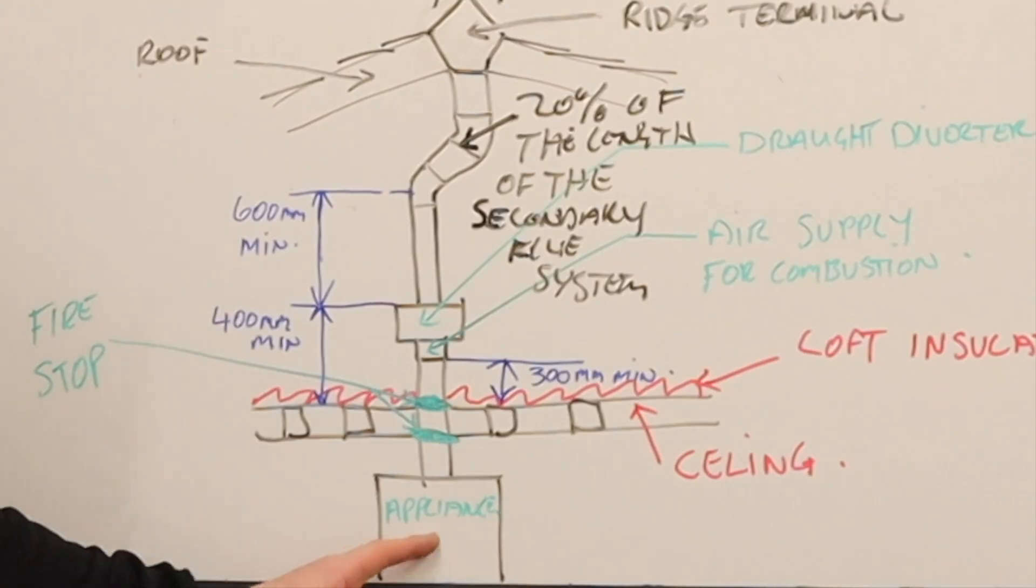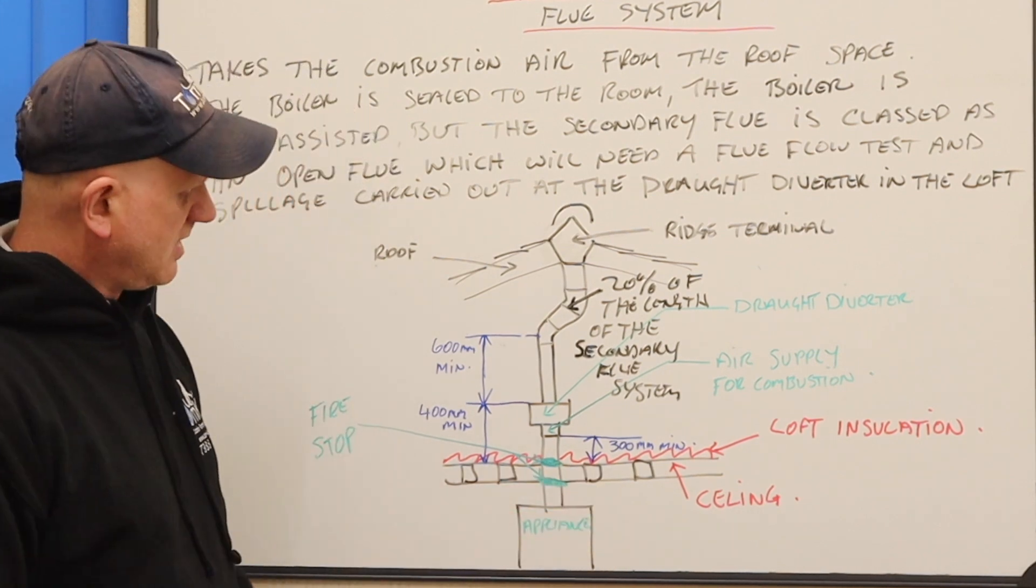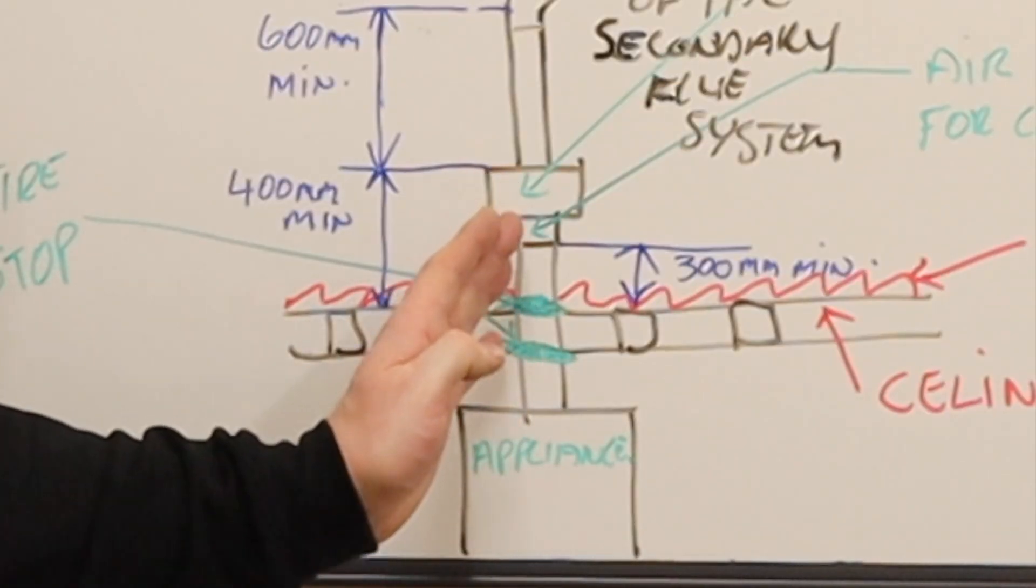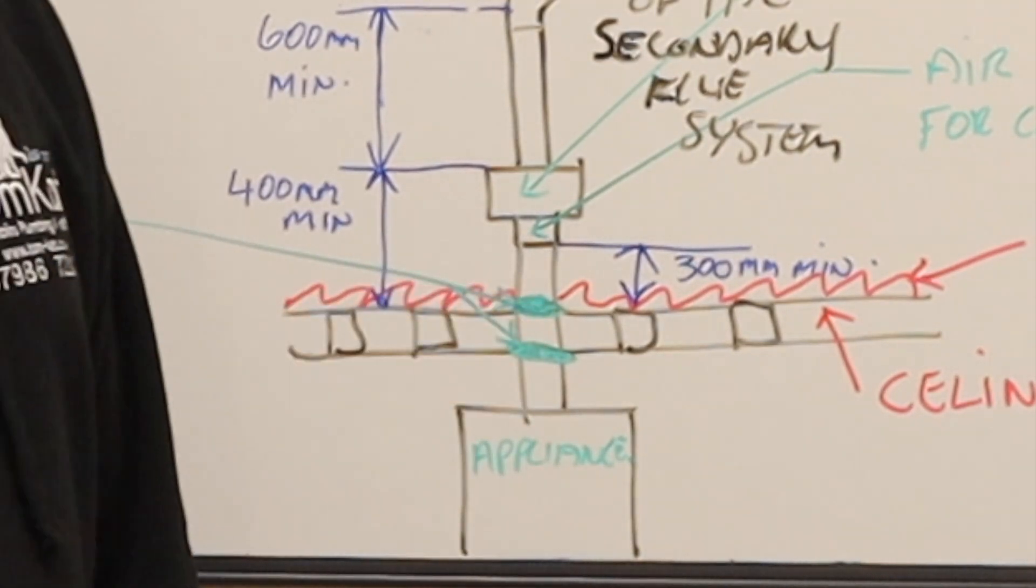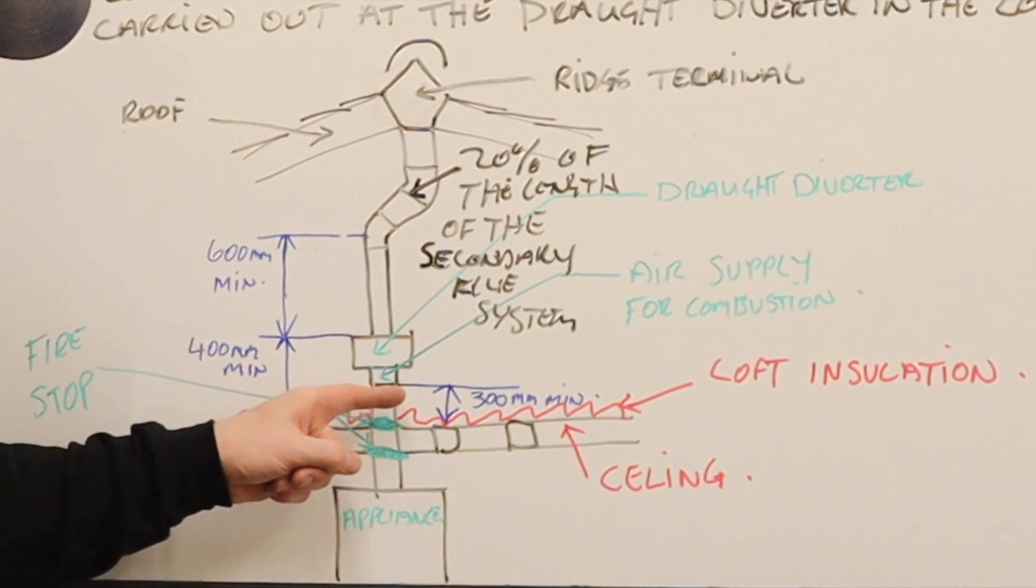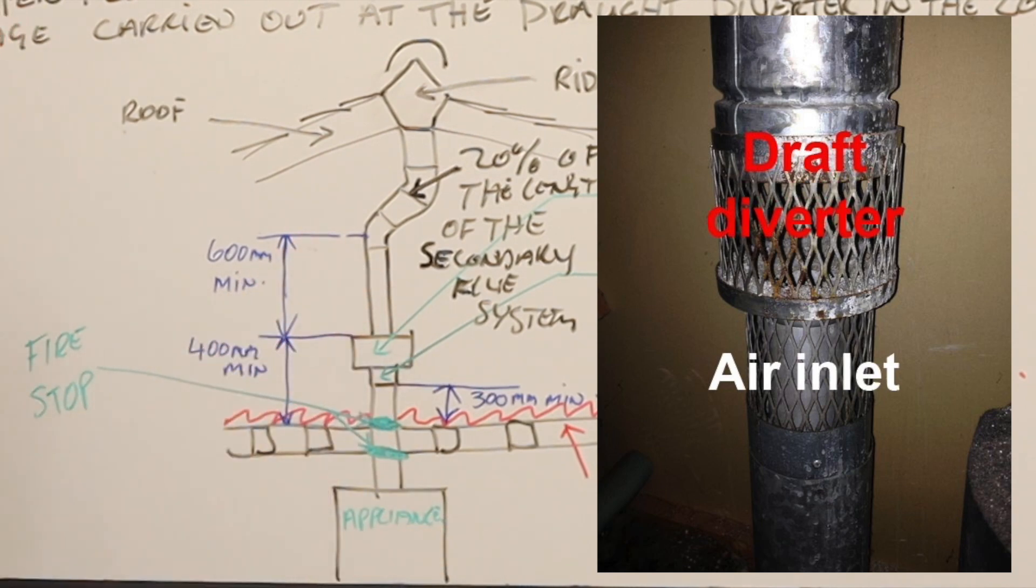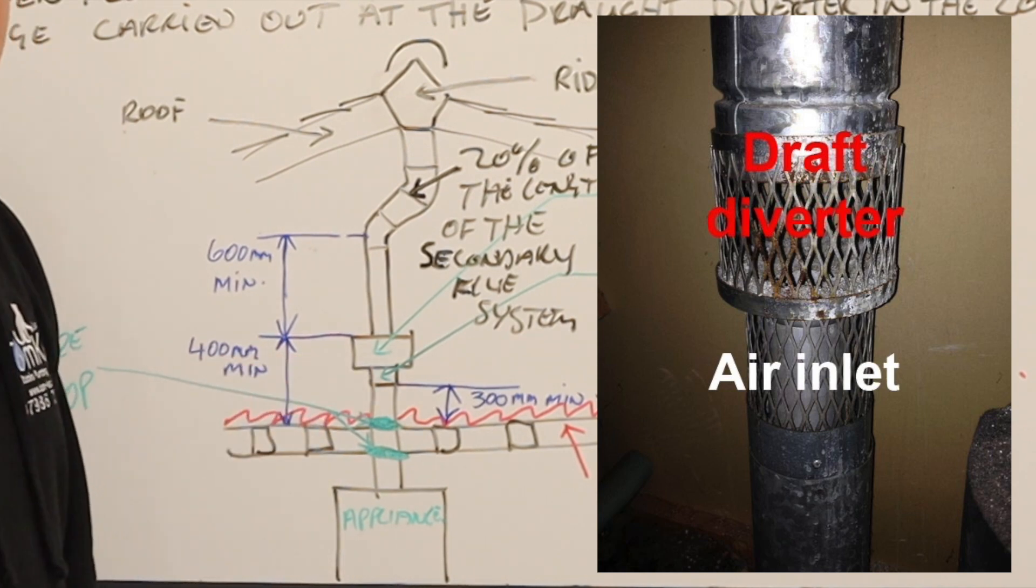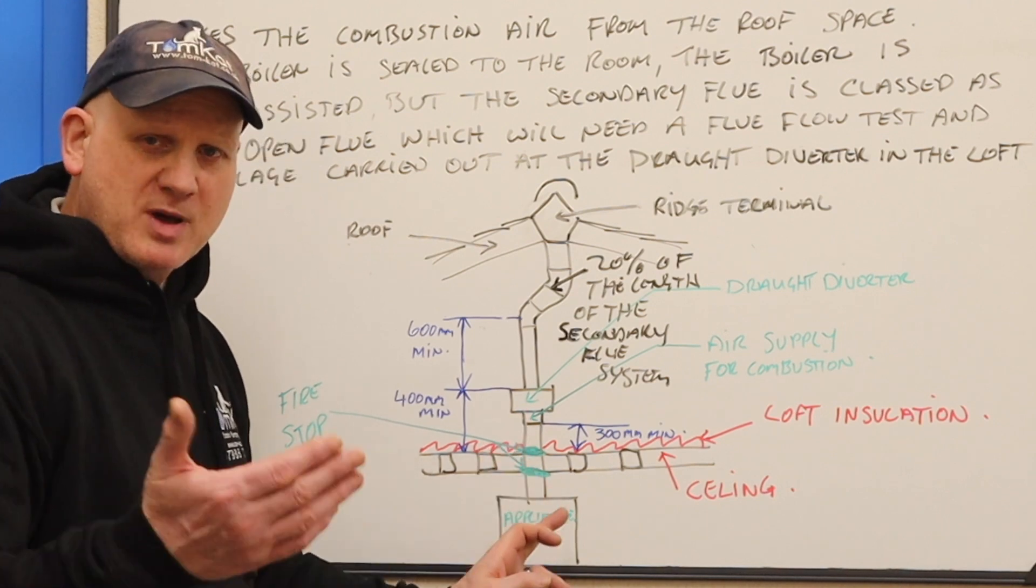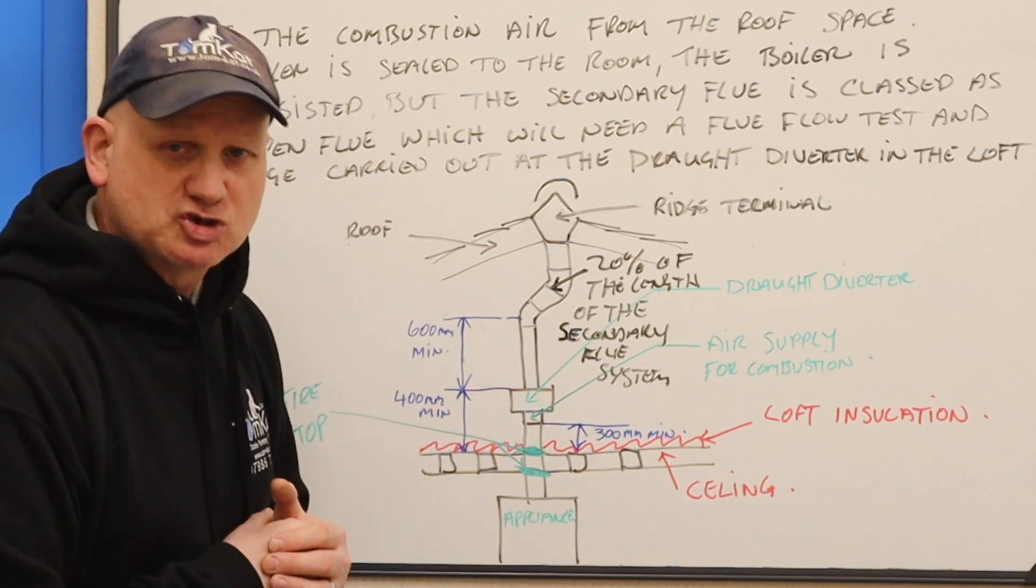You'll need to do a flue flow test and spillage at the draft diverter. So let's look closely at it. There's our appliance - this is your room sealed appliance. This could be installed in any room downstairs and does not need ventilation in that room, as the primary flue comes up. When it passes through the ceiling, it will need fire stops top and bottom. This little red wiggly line is the loft insulation, and this is the vertex or silver flue system. The bit at the bottom is where the air supply comes in for combustion. This is like your standard twin pipe system - you've got the air on the outside and the products of combustion coming up through the inside.